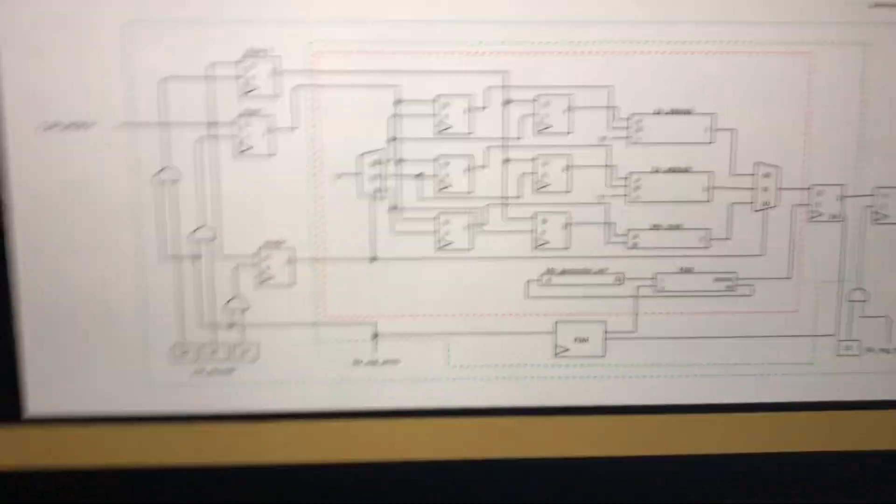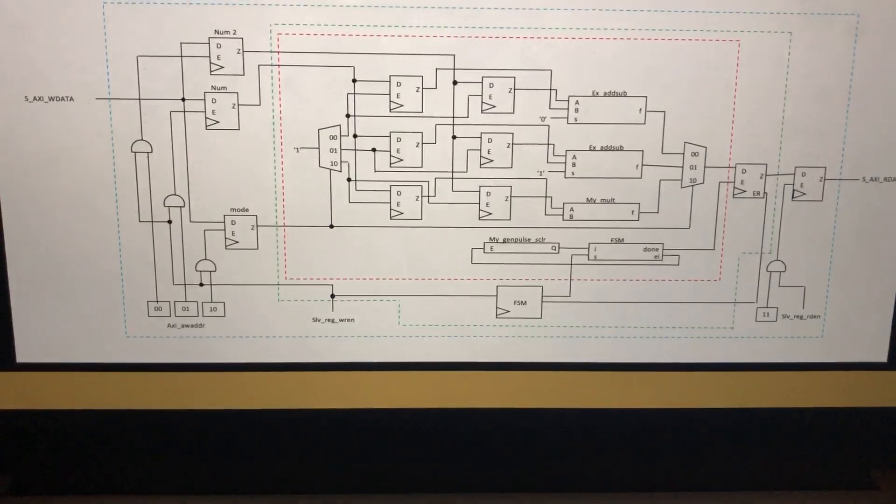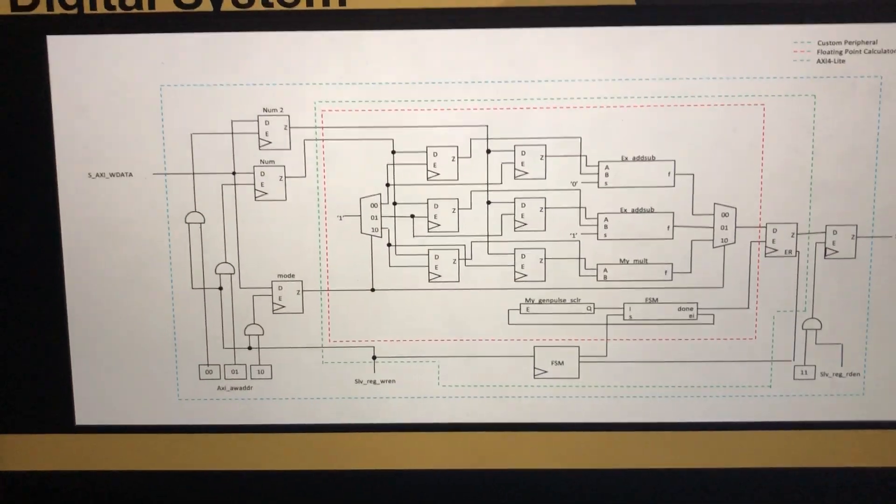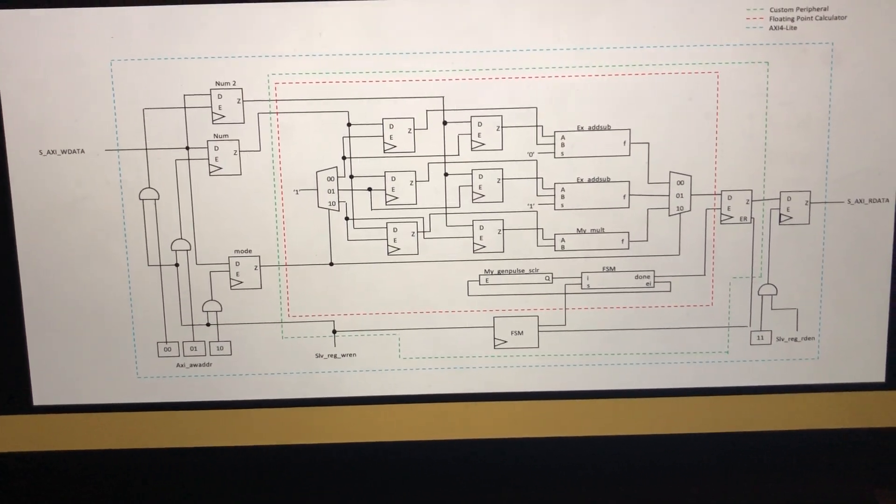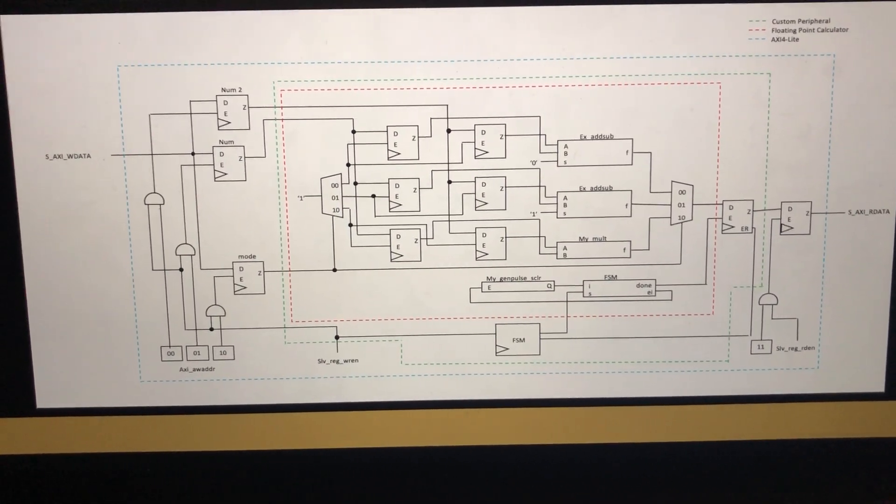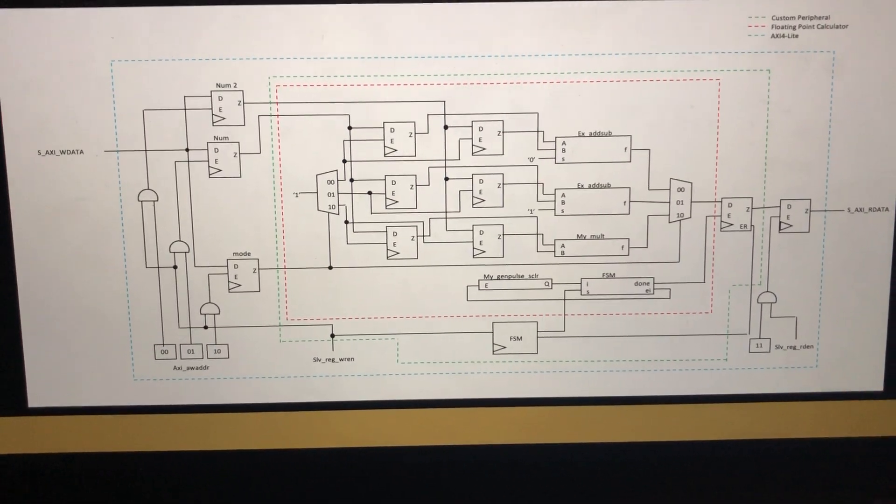From there, the two NUMs are fed into all six registers. The mode supplies the signals to the multiplexer to choose which two registers to enable.